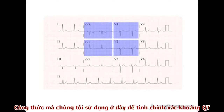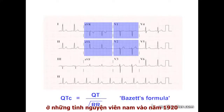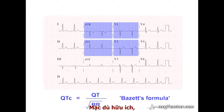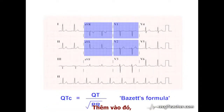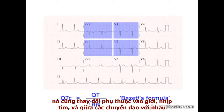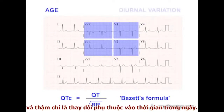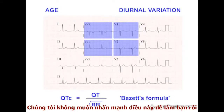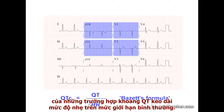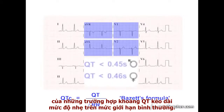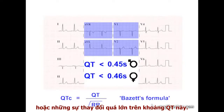The equation used here to calculate the corrected QT was developed from empirical observations on male volunteers in the 1920s. While useful, it does not yield perfect results, particularly at high heart rates. In addition, as well as varying with gender, heart rate, and between leads, the QT interval also varies with age and even with the time of day. We raise these issues not to confuse you, but merely to emphasise that it is difficult to assess the clinical significance of minor levels of QT prolongation. The key is not to miss gross prolongation or major changes in the interval.